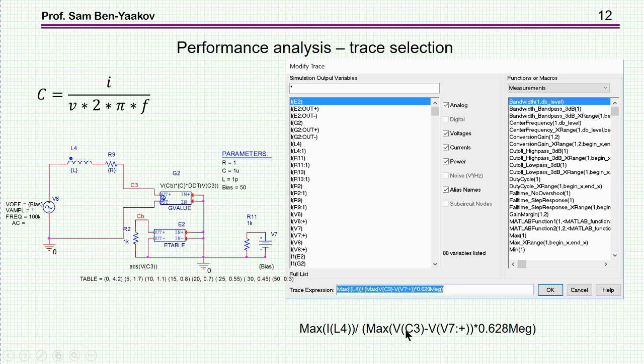Since this capacitor voltage includes a DC component because of the bias, and I want only the AC component, I'm going to subtract the DC component. To do this, I have actually put here a source, the value of which is the bias. So if the bias is changing, this source is changing. And at each point, I can subtract this bias value from the total capacitance value in order to get the AC component.